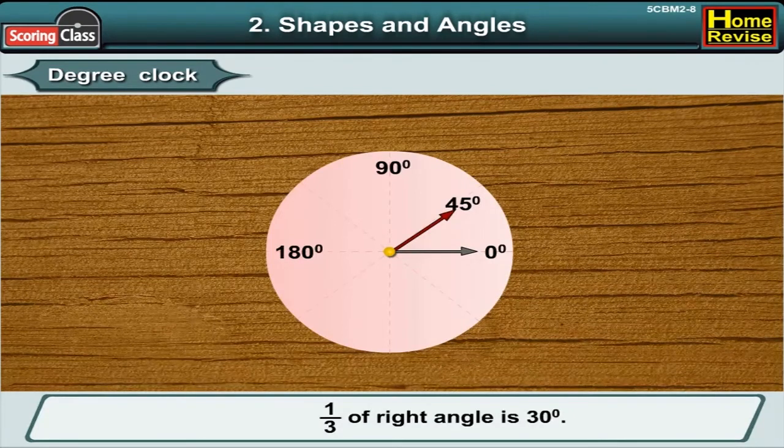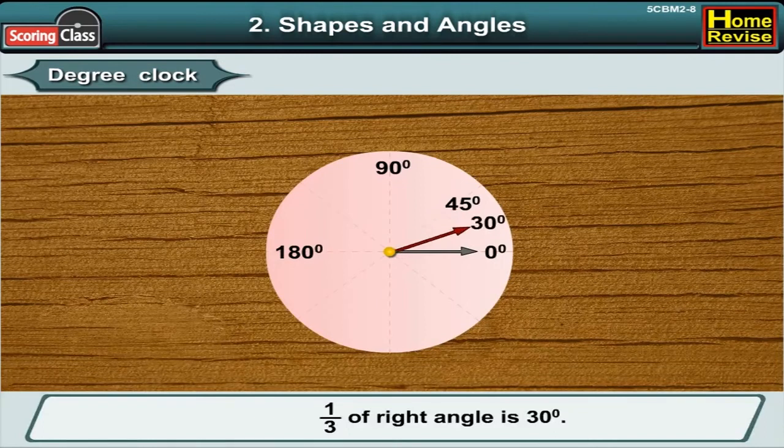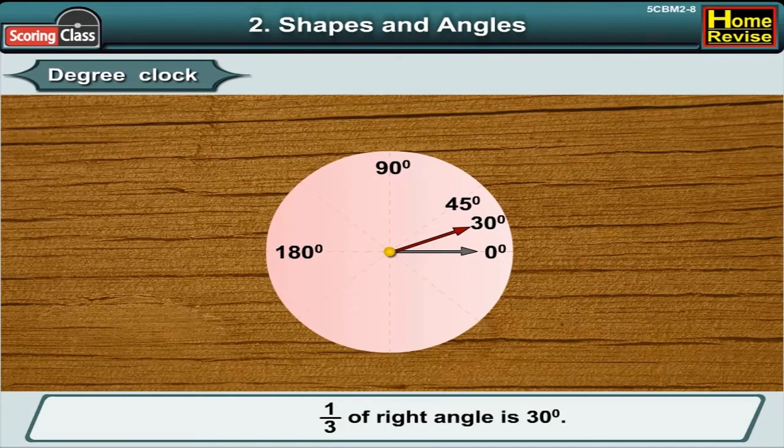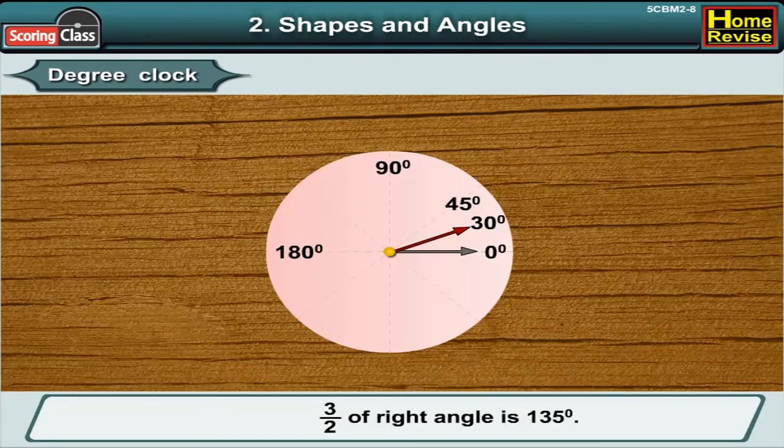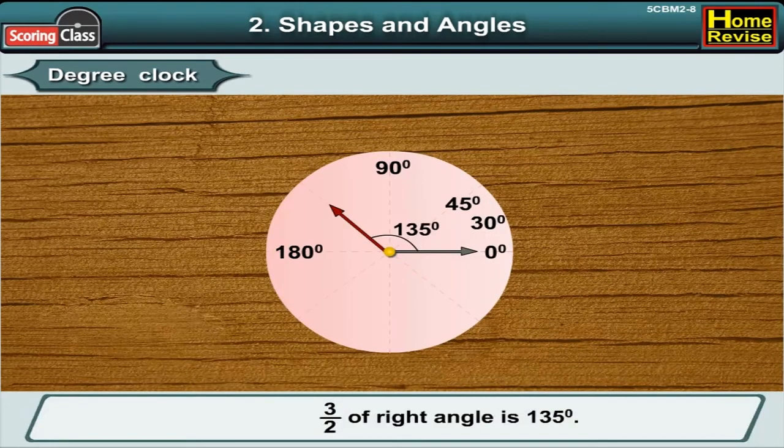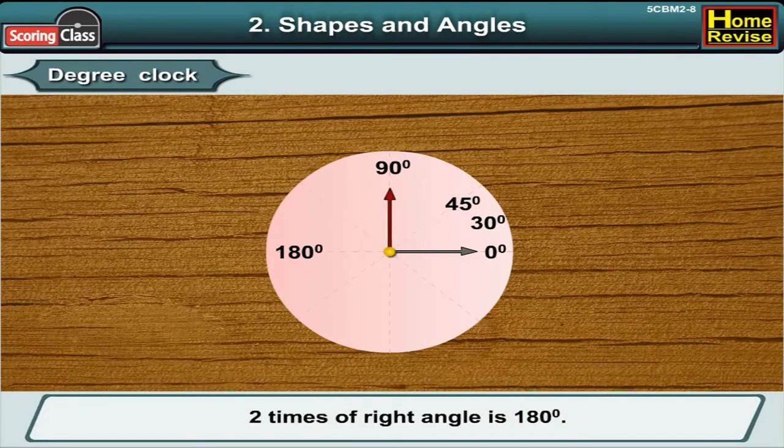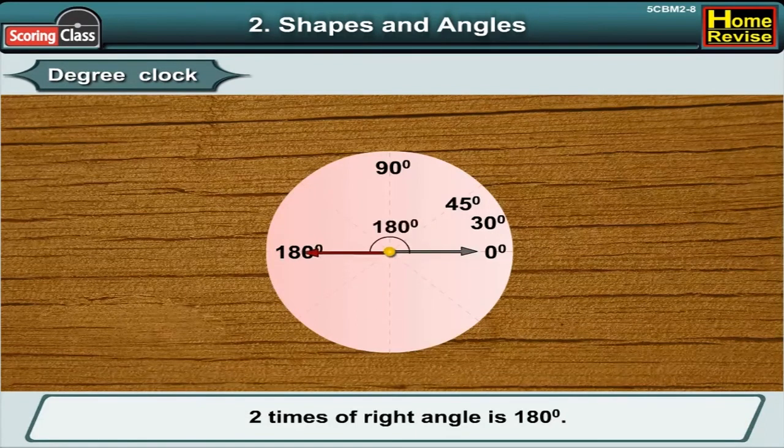One-third of a right angle is 30 degrees. Three-halves of a right angle is 135 degrees. And two times a right angle is 180 degrees.